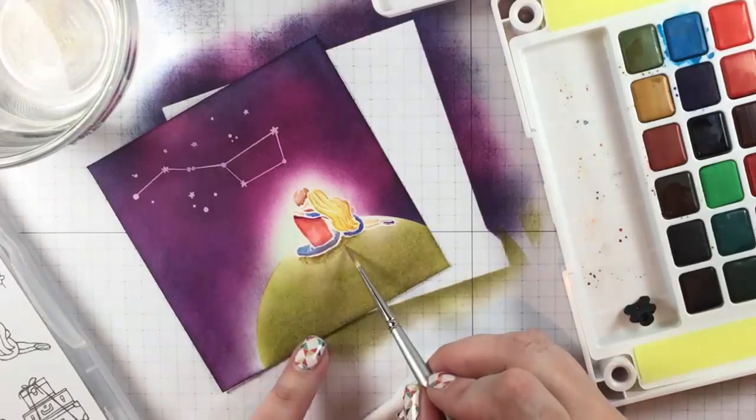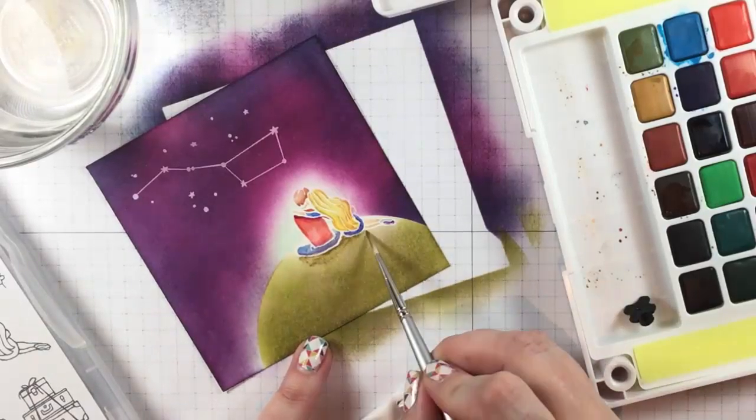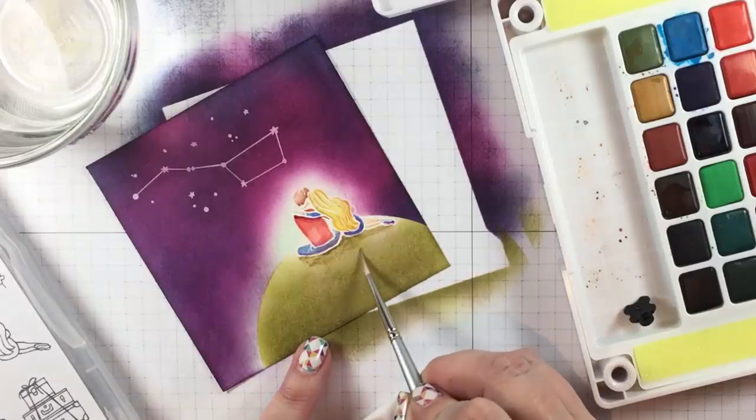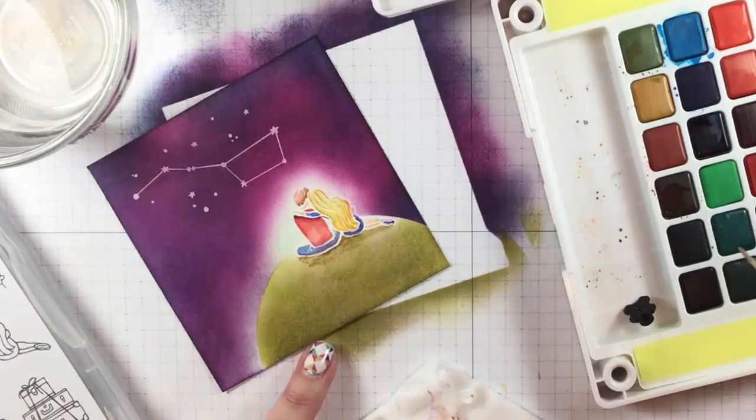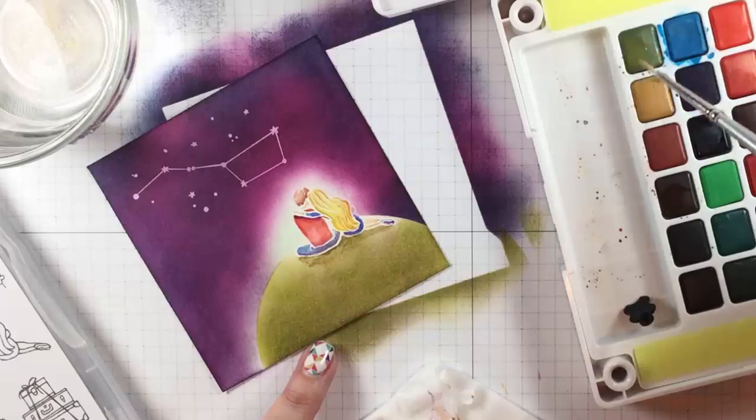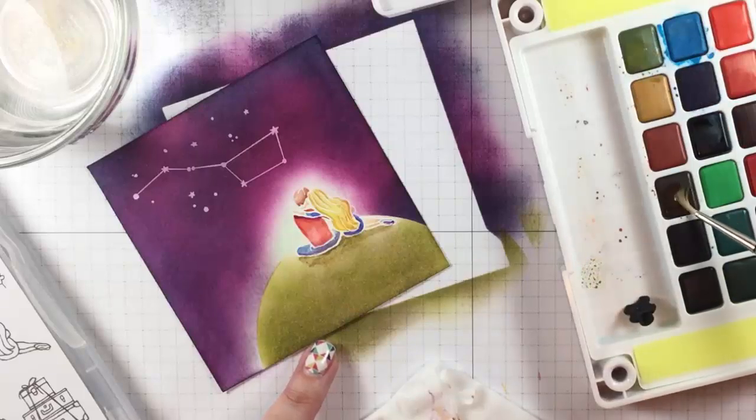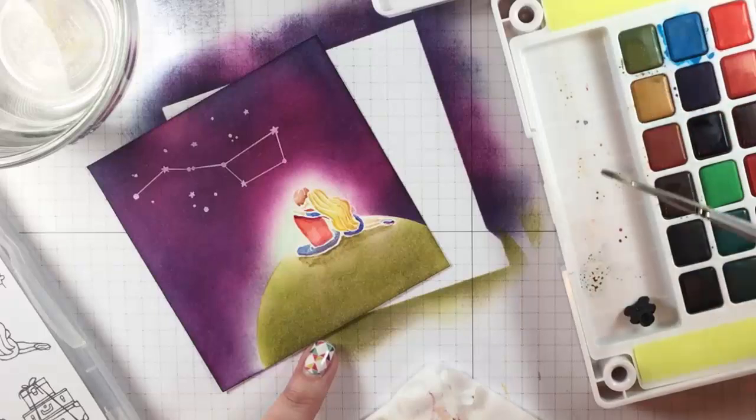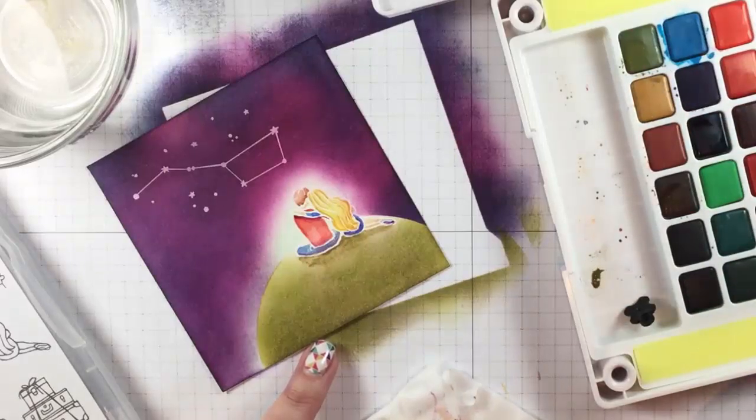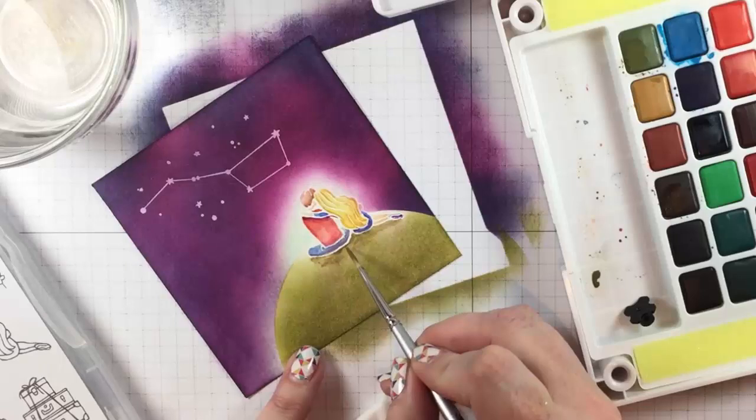But then after I've colored them all in, I do want that light that's coming from the front to look like it's casting a shadow behind them. And so I'm going to try to just very generally recreate what I think the shape of their shadow would be behind them from the way that they're sitting.